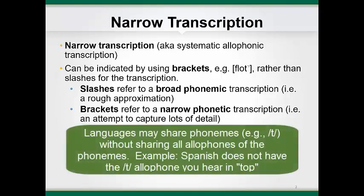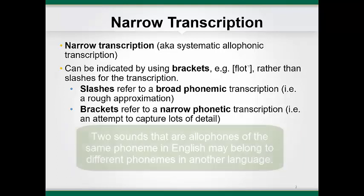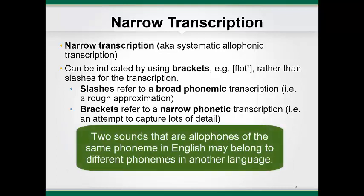Furthermore, just because two sounds are allophones in English doesn't mean that another language with that phoneme will have the same allophones. For example, the aspirated t in 'top' does not occur in Spanish, and in other languages, the aspirated and unaspirated versions may belong to different phonemes.